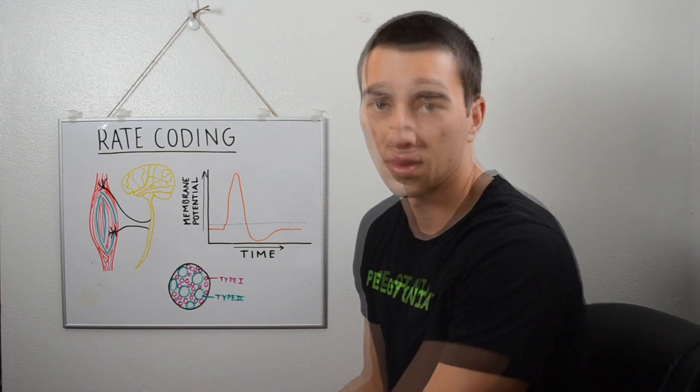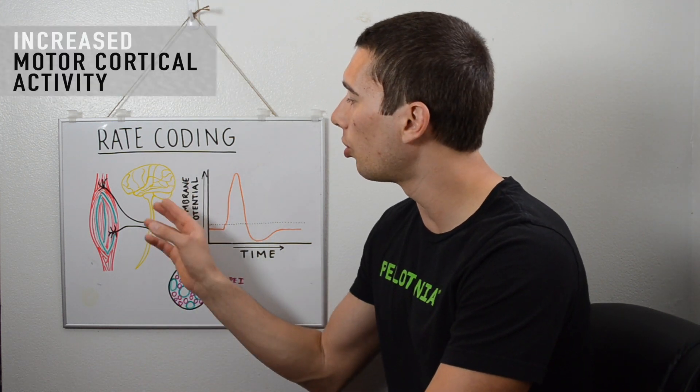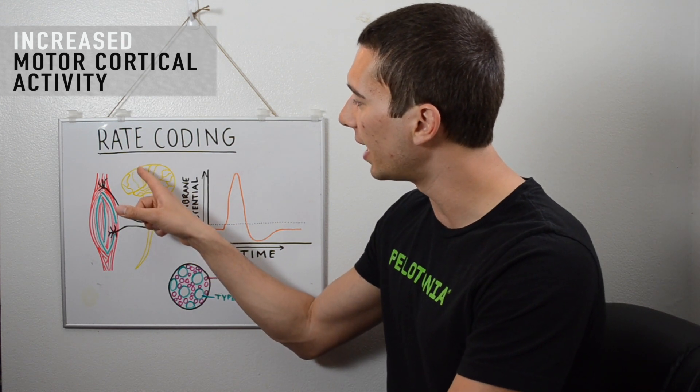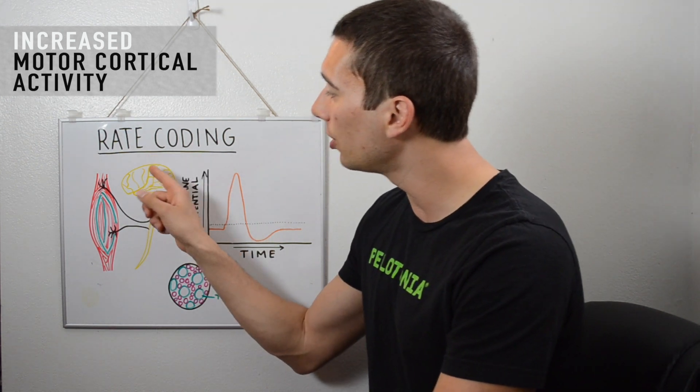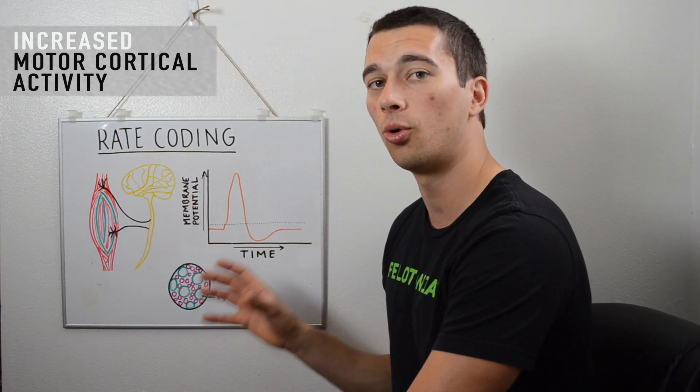We can have increased motor cortical activity, meaning that if this is the primary motor cortex and that's where we're generating that signal to the muscle, we can have higher recruitment from that primary motor cortex and send a greater signal to the muscle that way.